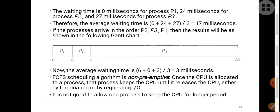Suppose these processes arrive in the order P2, P3, P1. Then P2 gets the CPU first and uses it till the 3rd millisecond. After that, P3 uses the CPU till the 6th millisecond. Then P1 uses 24ms, ending at the 30th millisecond. The average waiting time for this sequence is (6 + 0 + 3) / 3 = 3 milliseconds.